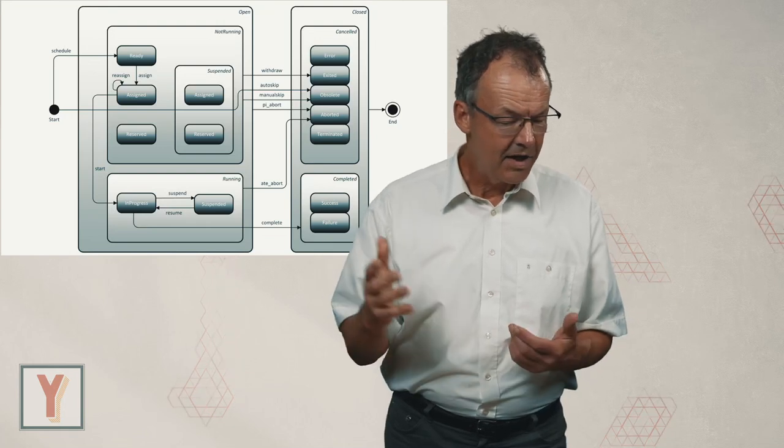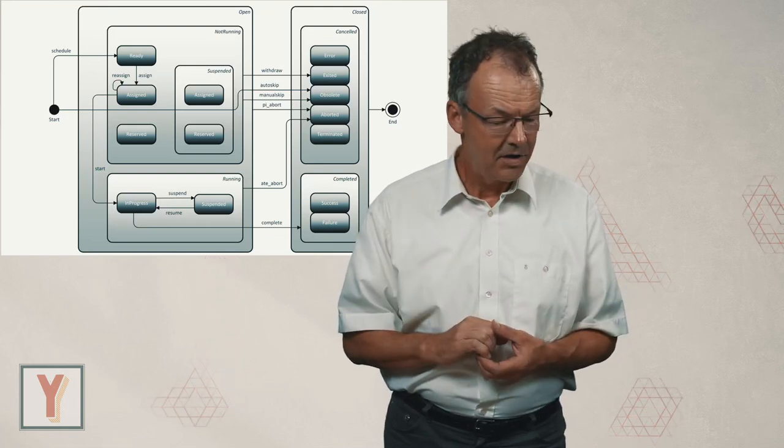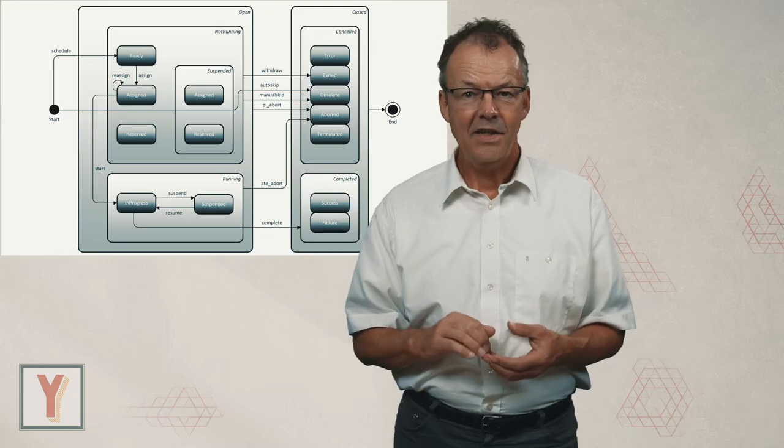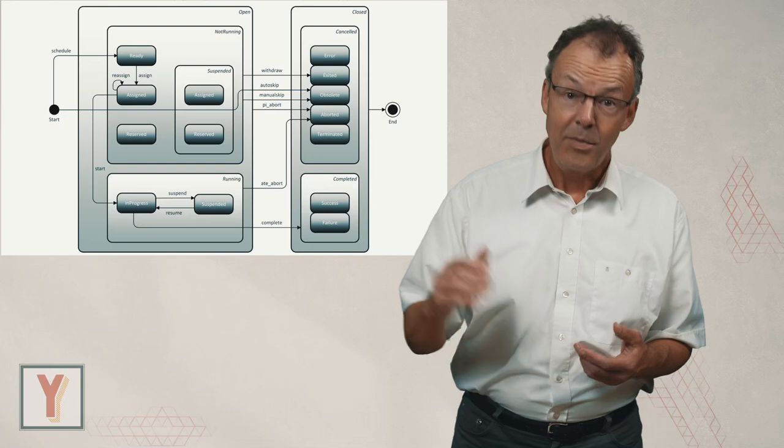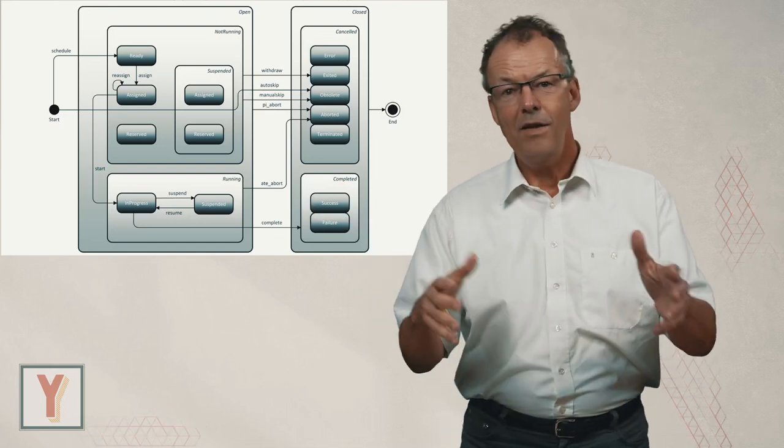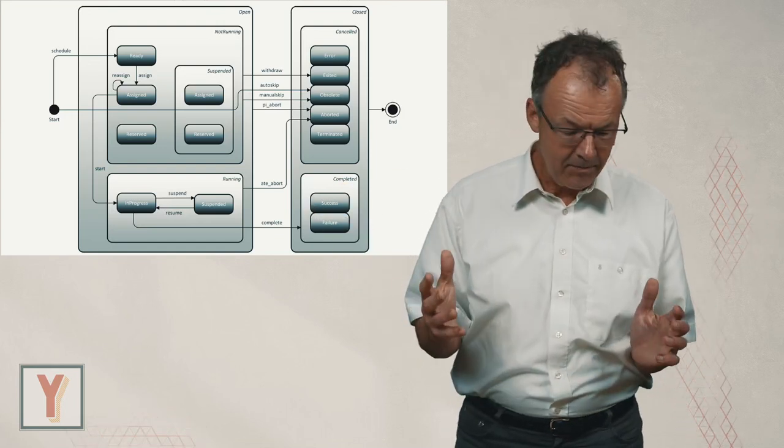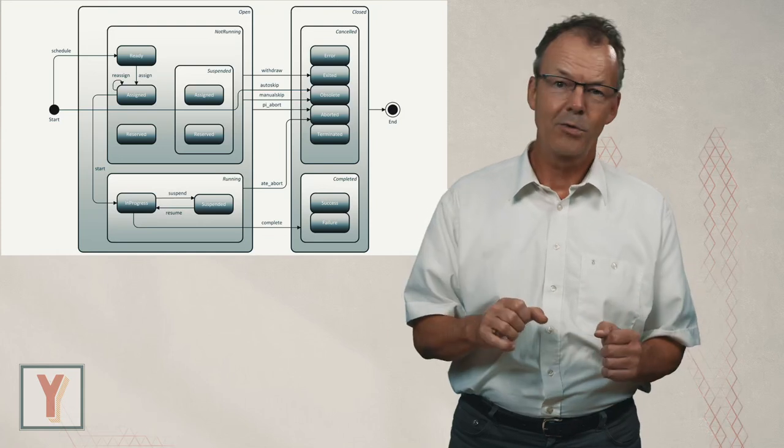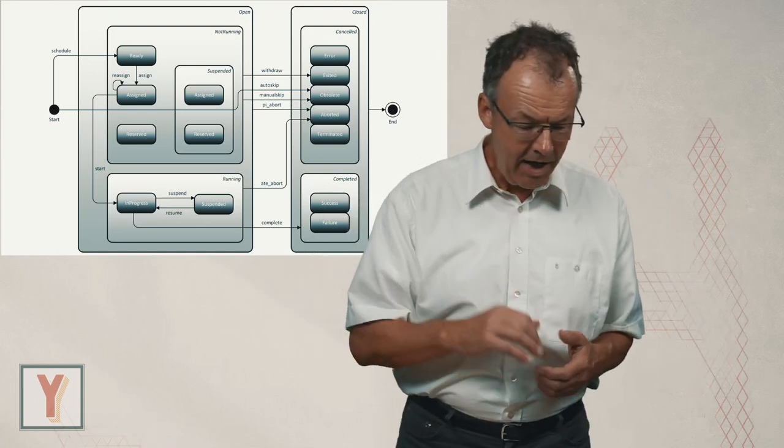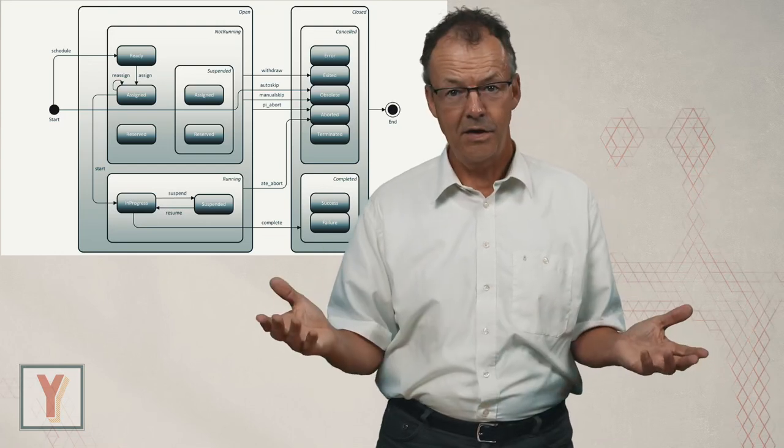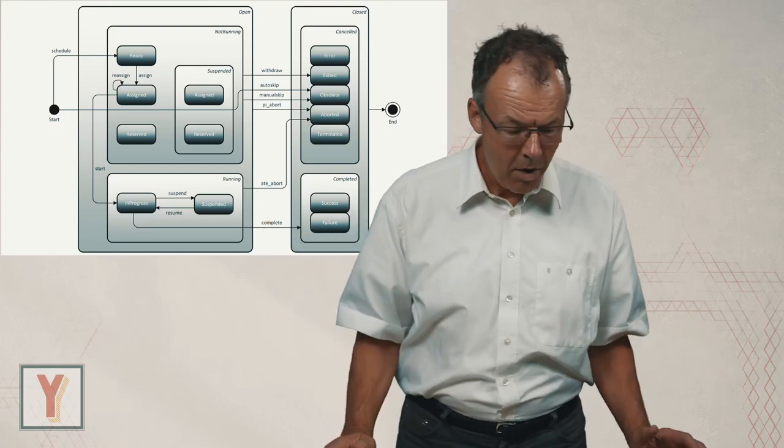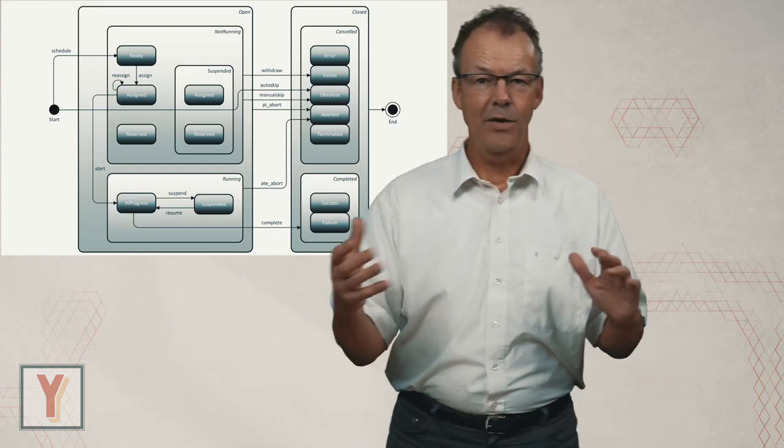Usually it starts with the start state. Then in the next phase the work item can be assigned, it can be reserved for example, and then eventually it is in progress. While it is in progress it can be suspended, and it can also be finished. It can be successfully finished or it can fail, or it can result in some kind of error.